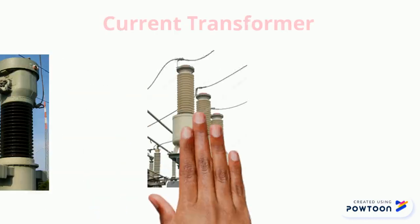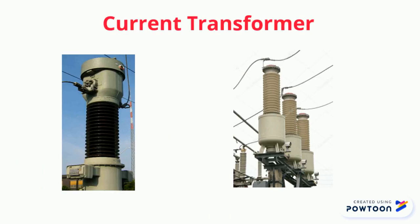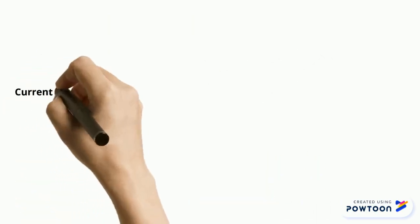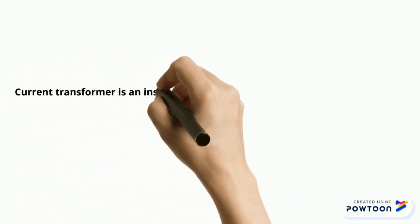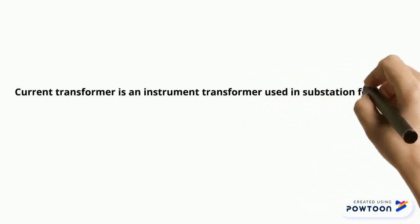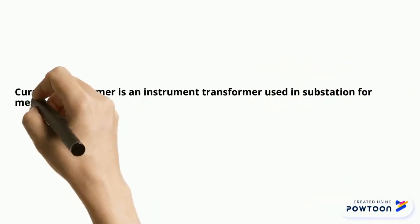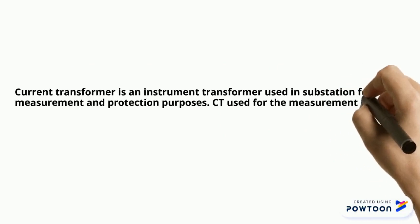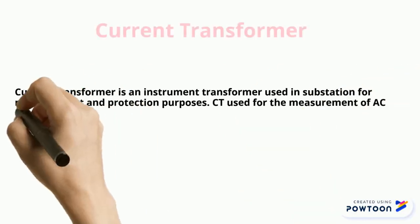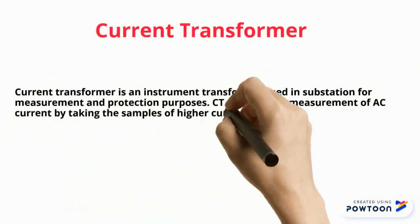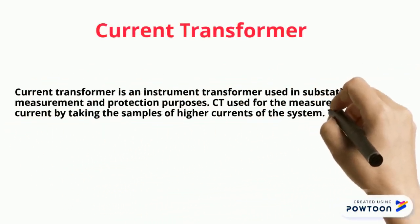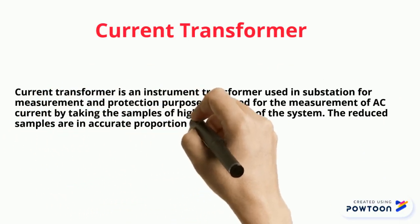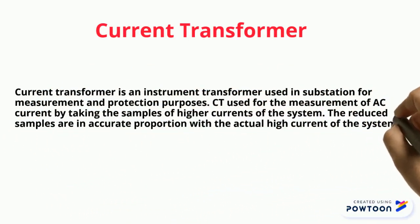Current Transformer. A current transformer is an instrument transformer used in the substation for measurement and protection purposes. CTs are used for the measurement of AC current by taking samples of higher currents of the system. The reduced samples are in accurate proportion with the actual high current of the system.